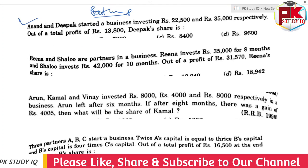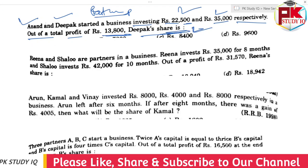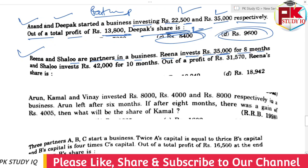Anand and Dipak started a business investing Rs. 22,500 and Rs. 35,000 respectively. The total profit is Rs. 13,800. Find the share of the profit for each. If you have a district code and the option is not available, you can write this answer in the description type.